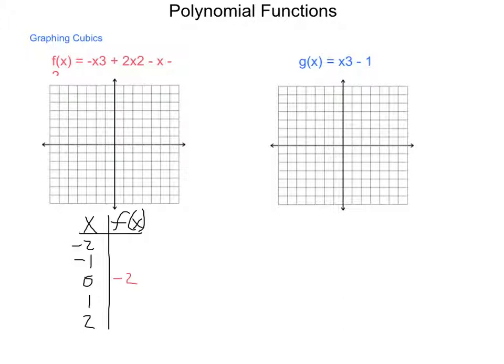Now if I start substituting in say 1, 1³ is 1 so that makes a -1, then 1² is 1 times 2 makes 2, minus minus that 1, and then minus 2 in the end, so -1 + 2 - 1 - 2 gives me another -2.